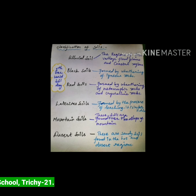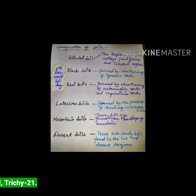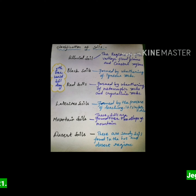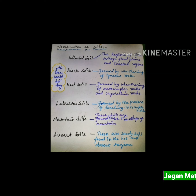Alluvial soil: these soils are found in the region of river valleys, flood plains and coastal regions. It is the most productive of soils. It is suitable for the cultivation of sugarcane, jute, rice, wheat and other food crops.